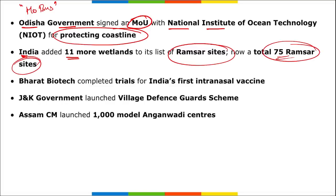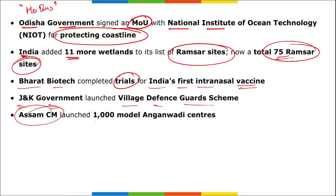Remember India's total Ramsar sites as 75 - same as the years of independence India has completed - easy to remember! Bharat Biotech completed trials for India's first intranasal vaccine. The Jammu and Kashmir government launched the Village Defense Guard scheme. The Assam Chief Minister launched 1,000 model Anganwadi centres.